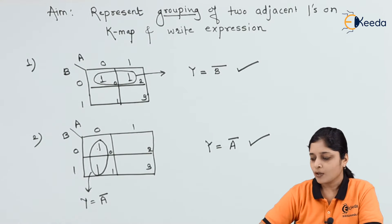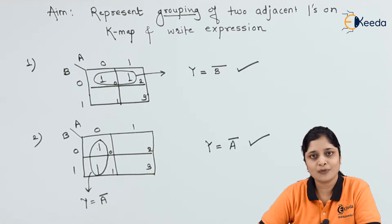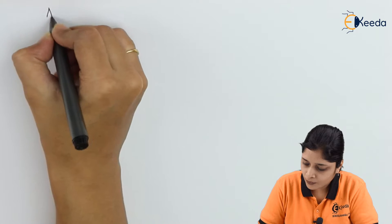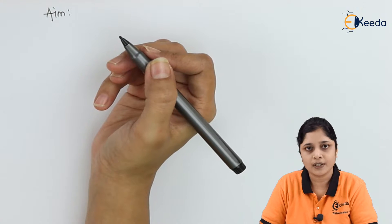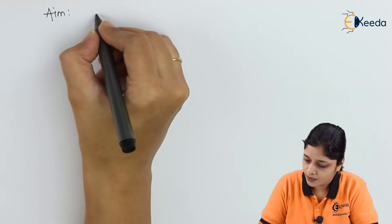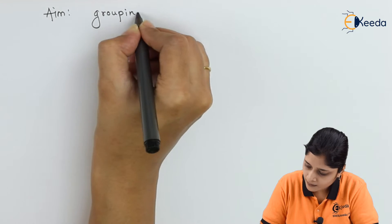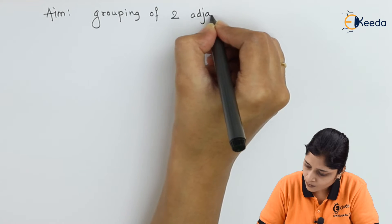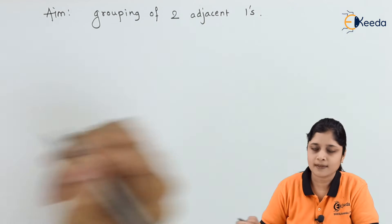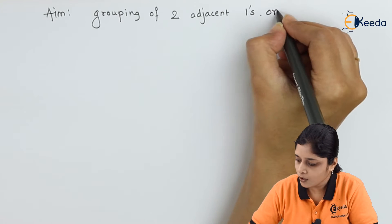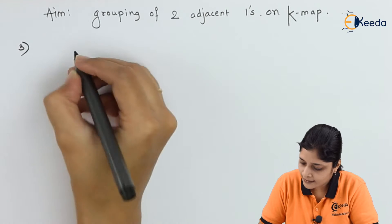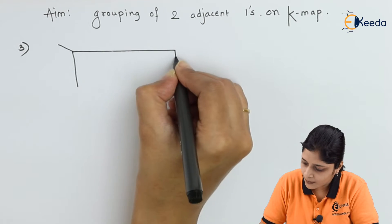Now we will see for three variables: how to calculate the final expressions. The aim is grouping of two adjacent ones on K-map.